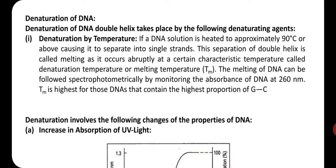DNA is very stable at a particular temperature, but there is a temperature at which the DNA gets denatured. The temperature of somewhere around 78 to 80 degrees centigrade is called the melting temperature. Melting temperature is the temperature at which half of the DNA — that is 50 percent — gets denatured. This temperature is called the denaturation temperature or melting temperature.